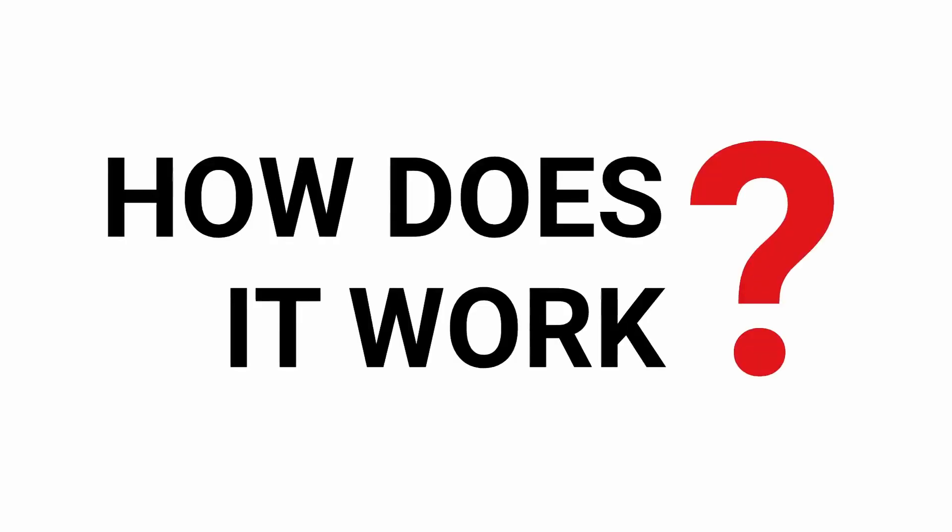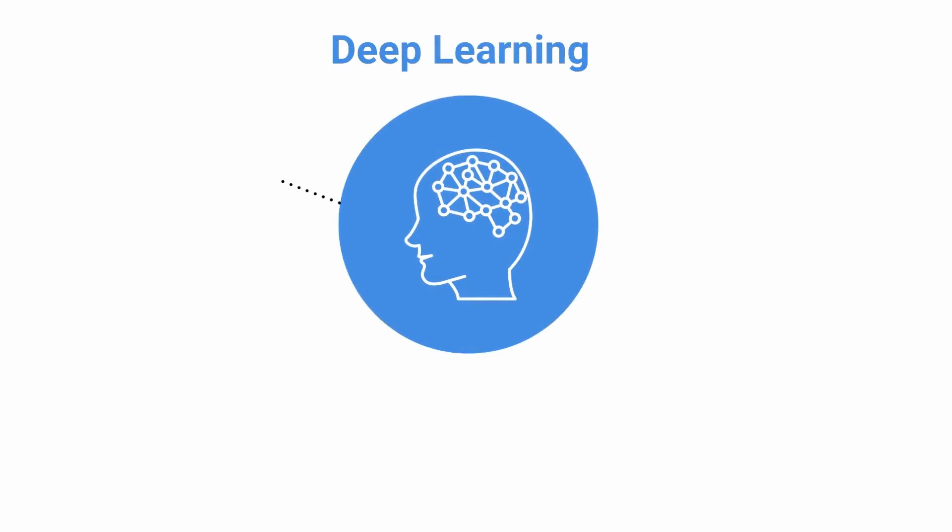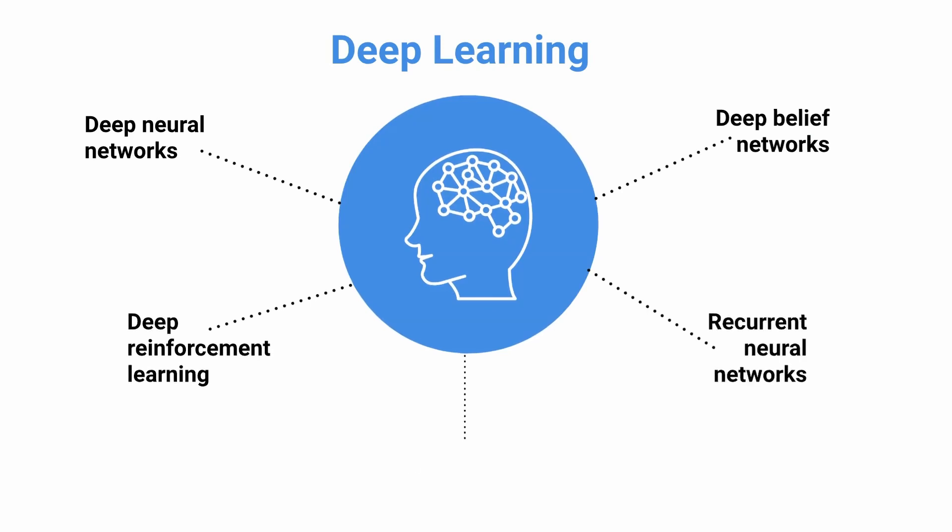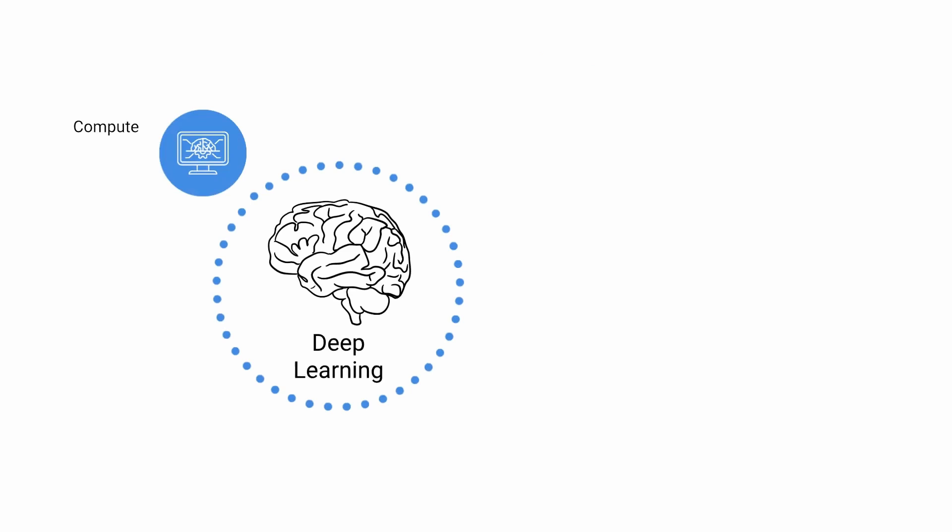How does it work? Deep learning architectures such as deep neural networks, deep belief networks, deep reinforcement learning, recurrent neural networks, and convolutional neural networks have been applied to fields including computer vision, speech recognition, natural language processing, and machine translation.